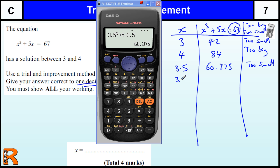So then we just start working our way up. 3.6 cubed plus 5 times 3.6, getting longer decimals now, so 64.656, still too small because I want 67.